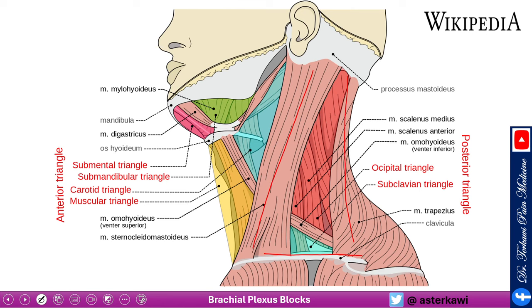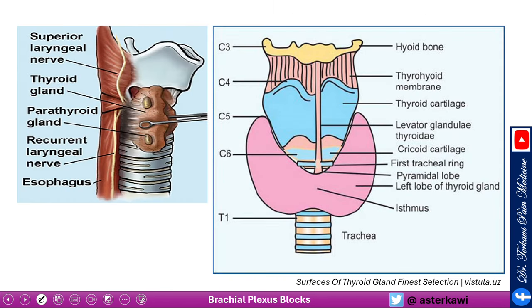The sternocleidomastoid forms the anterior border of the posterior triangle of the neck, which is our area of interest for this lecture. The posterior triangle is further divided by the omohyoid into the occipital triangle and subclavicular triangle. You'll also see the recurrent laryngeal nerve, which is relevant when discussing potential side effects of certain blocks. It runs in the groove between the trachea and esophagus. The cricoid cartilage, roughly at C6, is another important landmark for these blocks.